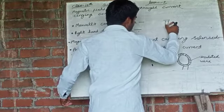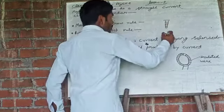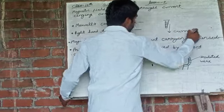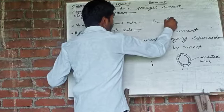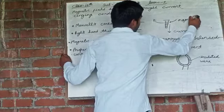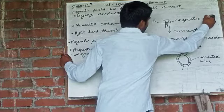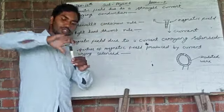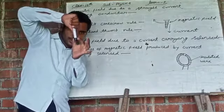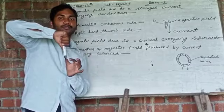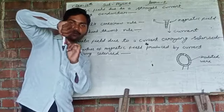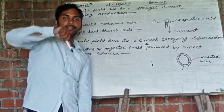Suppose this is a screw and this is the direction of current. This way will be the direction of magnetic field. Because if we turn the screw this way, it will go down and this will be the forward movement of the screw, which represents the direction of current. So this way, our thumb is moving, and this is the direction of magnetic field.